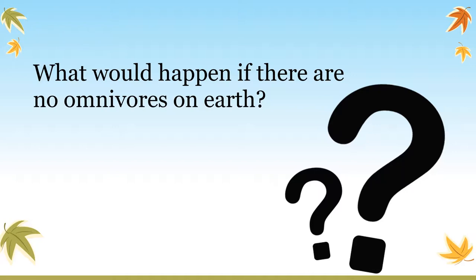In both cases, the balance of nature is disturbed. What would happen if there were no omnivores on earth? Since omnivores eat both plant and animal products, they help keep a balance between both. If omnivores disappeared from earth, it would also affect nature's balance. These food habits of different animals help in maintaining the balance of nature.